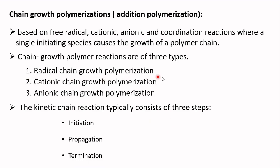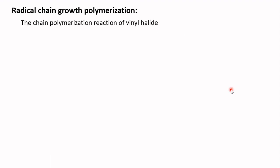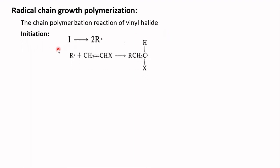The mechanism of radical chain growth polymerization can be better understood by considering the chain polymerization reaction of vinyl halide. The mechanism proceeds in three different steps: initiation, propagation, and termination.